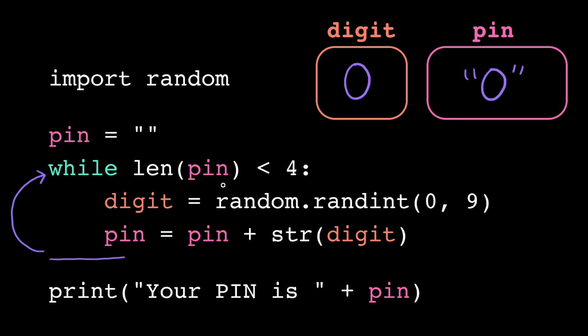We substitute in the value of pin, which is now the string 0. We take the length, which is 1. 1 is less than 4, so the loop condition still evaluates to true. That means we're executing the loop body again for a second iteration.